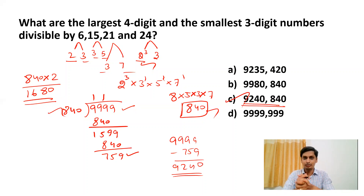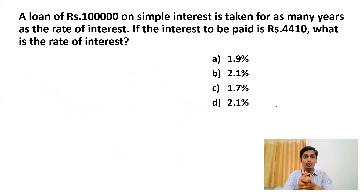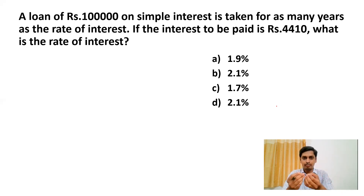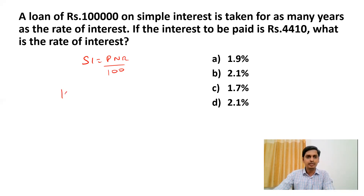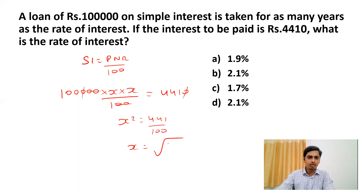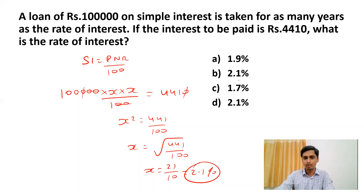Next question: A loan of rupees 1 lakh on simple interest is taken for as many years as the rate of interest. If the interest to be paid is rupees 4410, what is the rate of interest? Using the formula: Simple Interest = P × N × R / 100. Principal = 1 lakh, N = x, R = x (both are equal), SI = 4410. Simplifying: x² = 441/100, so x = √(441/100) = 21/10 = 2.1 percent. The answer is 2.1 percent.